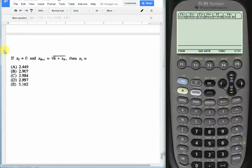So here is our question. They tell us that x sub 0 equals 0, x sub n plus 1, the next term is going to be rad 6 plus x sub n, and what is x sub 3?